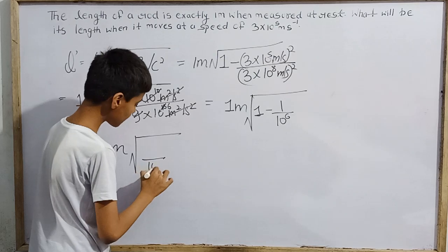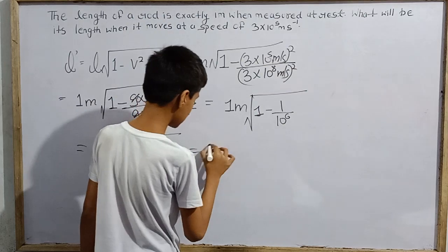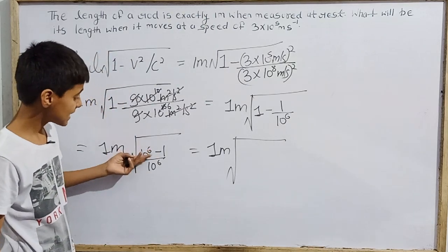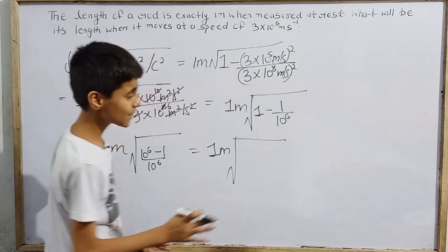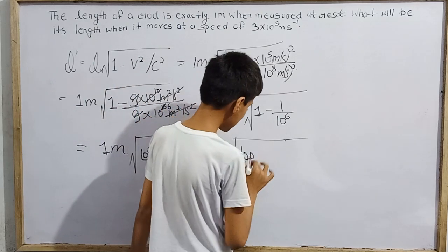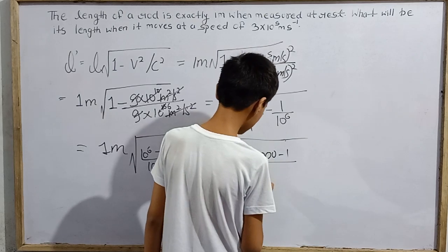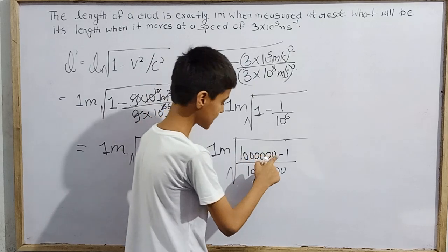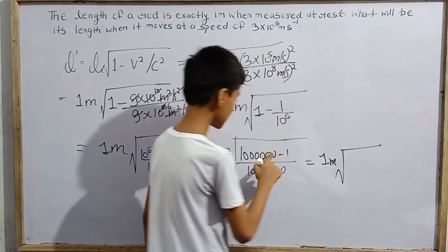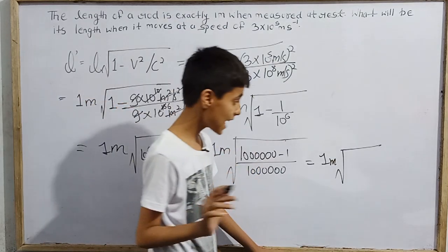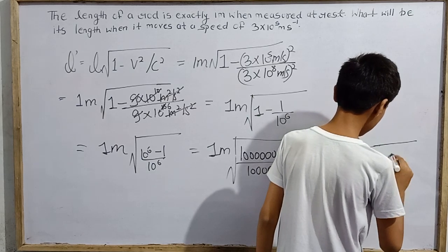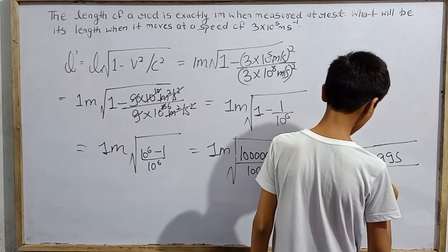Rewriting: 1 - 1/10⁶ = (10⁶ - 1)/10⁶ = 999,999/1,000,000. So L' = 1 meter × √(999,999/1,000,000). Using the rule √(x/y) = √x / √y, this becomes 1 meter × √999,999 / √1,000,000.